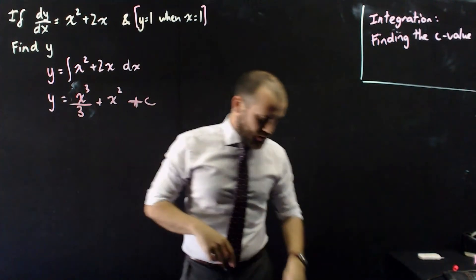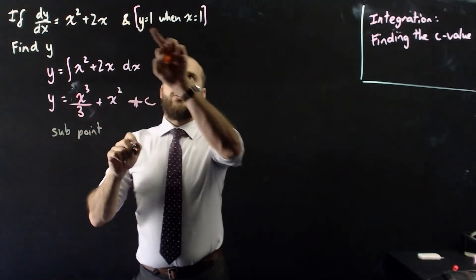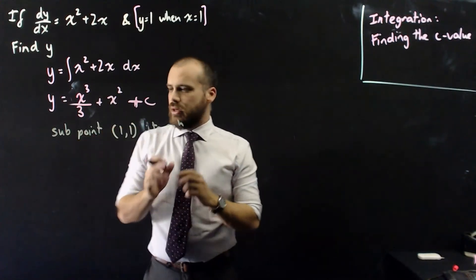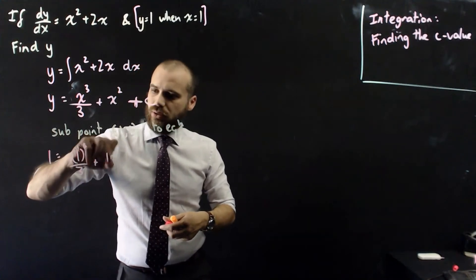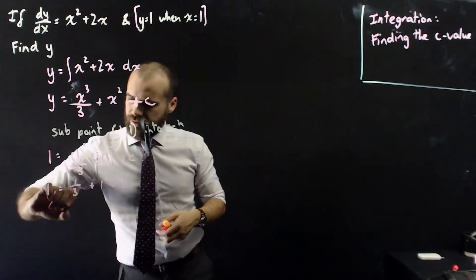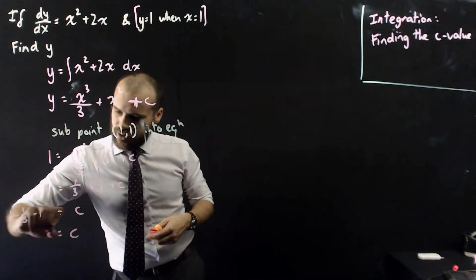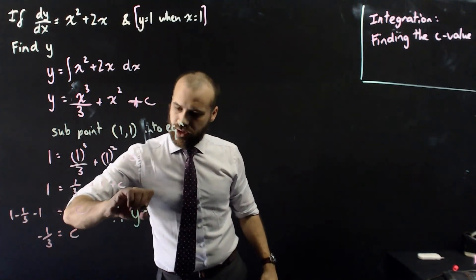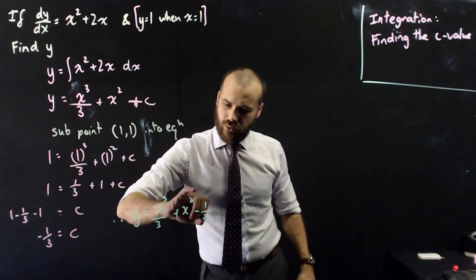Because we have this extra information, we can now find what plus c is by substituting the point (1, 1) into the equation. We get 1 equals 1 cubed over 3 plus 1 squared plus c, so 1 equals one-third plus 1 plus c. Therefore c equals 1 minus one-third minus 1, which is negative one-third. Therefore y equals x cubed over 3 plus x squared minus one-third.